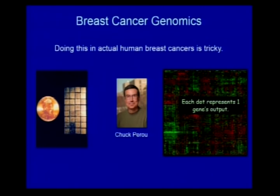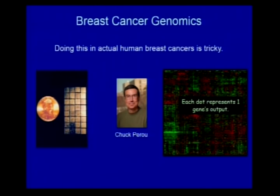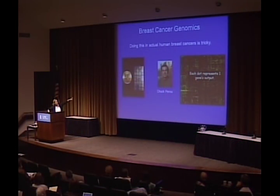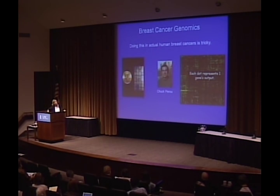My scientific colleague Chuck Perou, down the road here, is a PhD scientist I threaten to put a stethoscope around his neck regularly because he is a very medically oriented scientist. He was the first to do genomic profiling successfully in human breast cancer — the first solid tumor — about ten to fifteen years ago using this kind of technology. That's a gene chip, the thing on the right — not much bigger than a penny. And what you get from a microarray chip is red and green dots, where every dot — black, red, or green — is one gene.